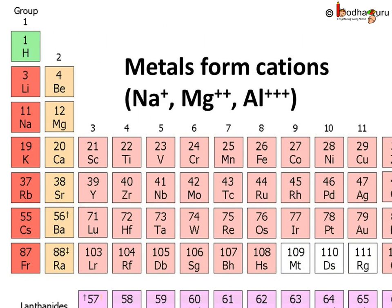Highly reactive metals, like alkali metals in Group 1 on the left side of the periodic table, give away electrons. Metals have 1, 2, or 3 electrons in the outermost shell. So it is easier to achieve the octet state by giving up electrons rather than by gaining 4 or more electrons. Hence, sodium, potassium, calcium, etc. form stable cations by giving up electrons.